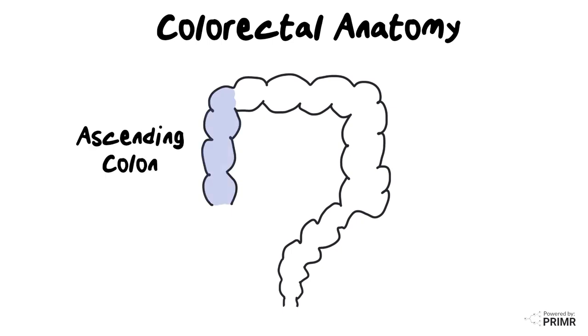The ascending colon is on the right side of the body and starts at the junction with the small intestine, going up to the right upper quadrant of the abdomen near the liver.